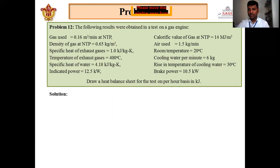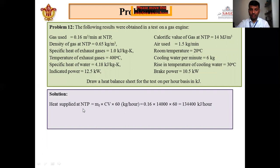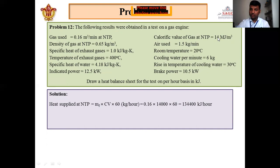We require the total energy supplied to the engine and how that energy is distributed. Heat supplied at NTP equals mf × CV × 60 (to convert from per minute to per hour). So: 0.16 m³/min × 14,000 kJ/m³ × 60 = 134,400 kJ/hour. This is the total energy generated by the fuel when burned over one hour.